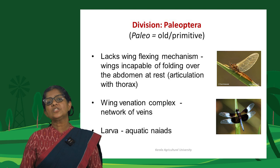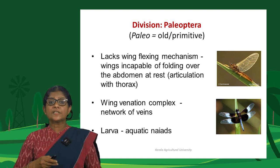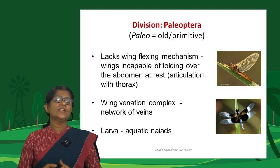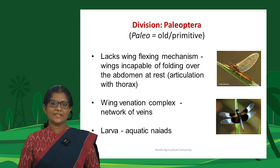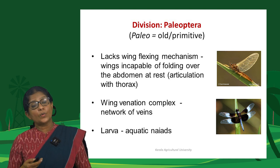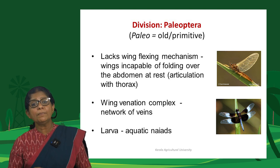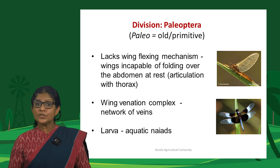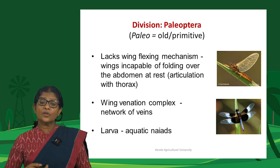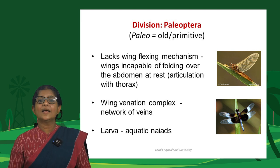Division Palaeoptera, from 'palaeo' (old/primitive) and 'ptera' (wing), have a primitive wing condition — they lack a wing-flexing mechanism and cannot fold their wings over the back of their abdomen while at rest. This refers to their peculiar wing articulation with the thorax. Their wing venation is often complex with a network of veins, and the larvae of all Palaeopteran members are aquatic, referred to as naiads.